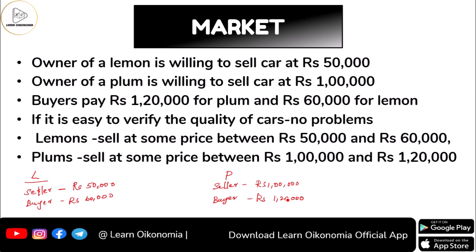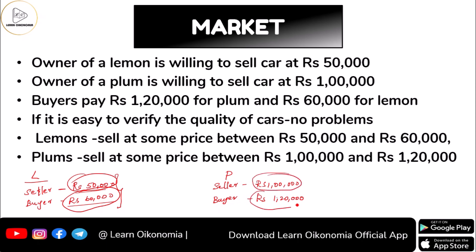Since the seller's price for a lemon is ₹50,000 and the buyer's price for a lemon is ₹60,000, trading regarding a lemon will happen at a price between ₹50,000 and ₹60,000. Similarly, in the case of a plum, since the seller's price is ₹1,00,000 and the buyer's price is ₹1,20,000, a transaction for a plum car would happen at a price between ₹1,00,000 and ₹1,20,000.